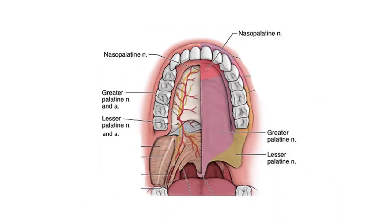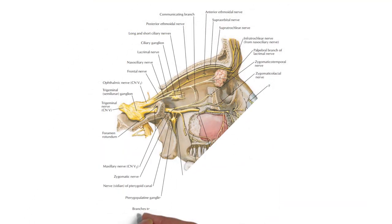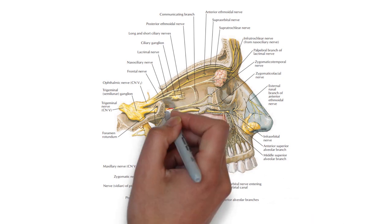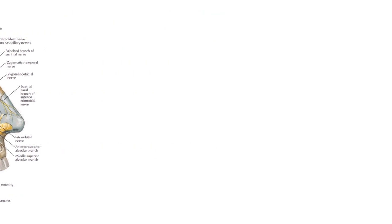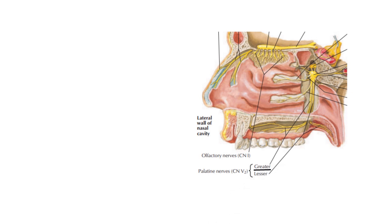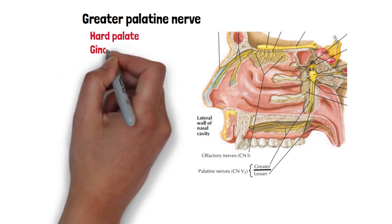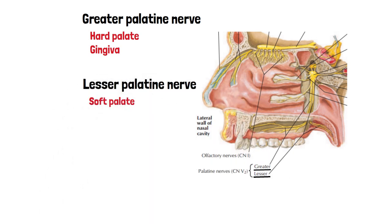Innervation to the palate is supplied by the greater and lesser palatine nerves and the nasopalatine nerve. The sensory fibers of these nerves originate in the pterygopalatine fossa from the maxillary nerve, which is a branch of the trigeminal nerve. The parasympathetic fibers of the glands in the palate and the special fibers of taste located on the soft palate are all from a branch of the facial nerve. The greater palatine nerve travels through the greater palatine foramen and turns anteriorly to supply the hard palate and the gingiva as far as the first premolar, while the lesser palatine nerve supplies the soft palate.